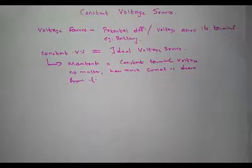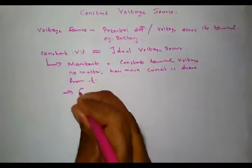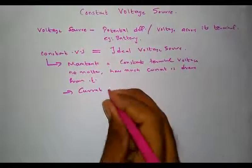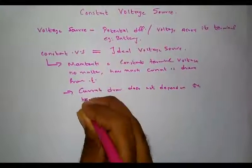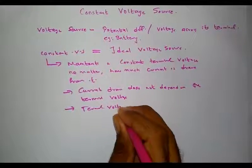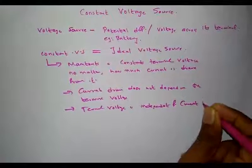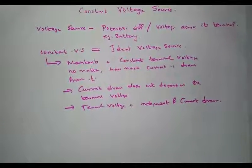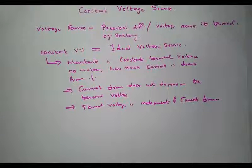A constant voltage source always provides a constant voltage, and the current drawn from the source is independent of the voltage across its terminals. That is, the current drawn does not depend on the terminal voltage, or equivalently, the terminal voltage is independent of the current drawn.